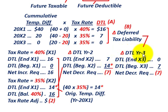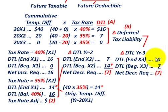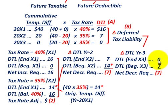For year X3, our beginning balance is the $7,000 carried from year X2. The deferred tax liability at end of year X3 is zero — it reversed out completely. So again, we need a net decrease of $7,000 — the change from beginning $7,000 to ending zero.